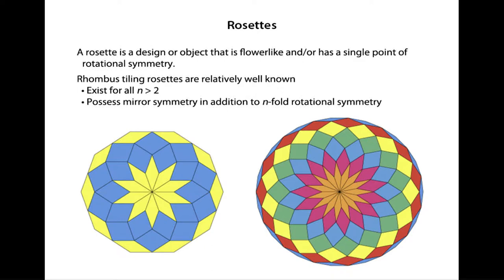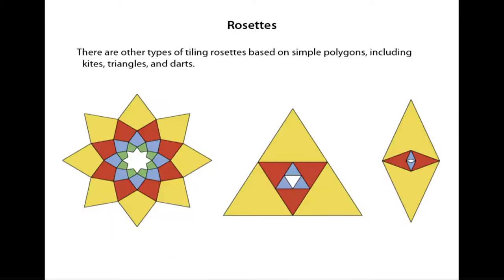Rosettes are designs with rotational symmetry, often with mirror symmetry. These ROM rosettes are well-known. They're tiling rosettes based on simple polygons: kites, triangles, darts. And these have a singularity — a singular point at the center — and they cover the entire plane.